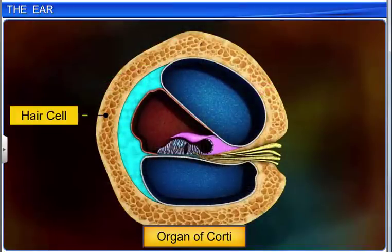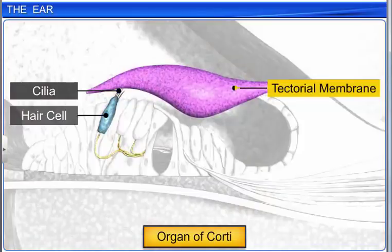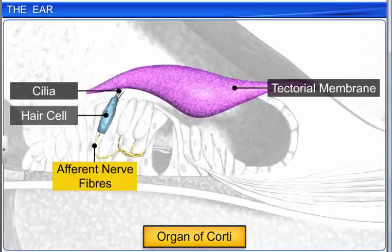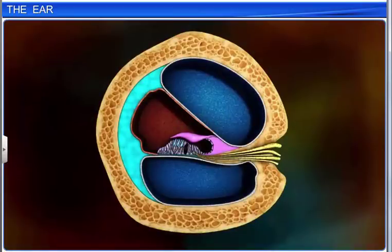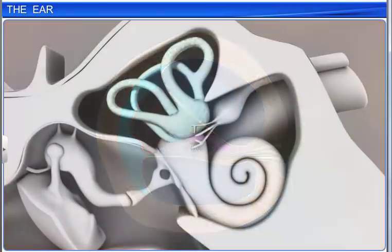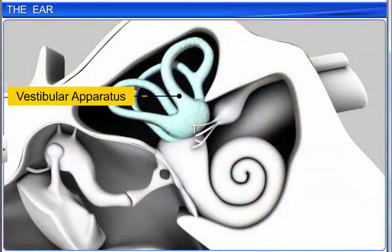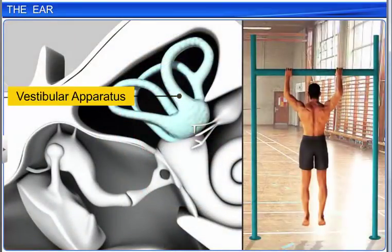Each hair cell has cilia on an apical part, which are in contact with the tectorial membrane, whose basal end is in contact with afferent nerve fibers. The inner ear also contains a complex system called the vestibular apparatus, that helps maintain the body's balance.